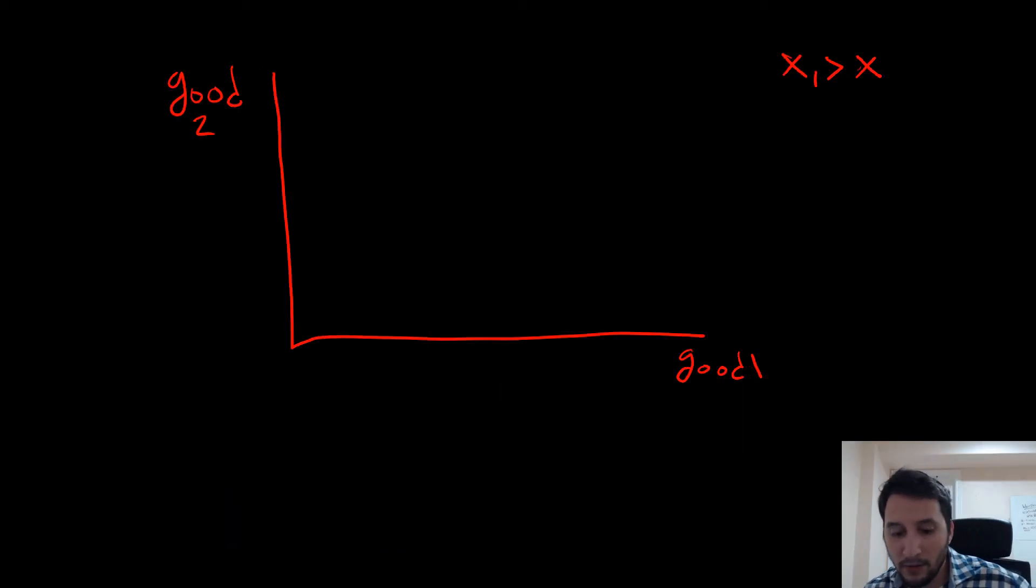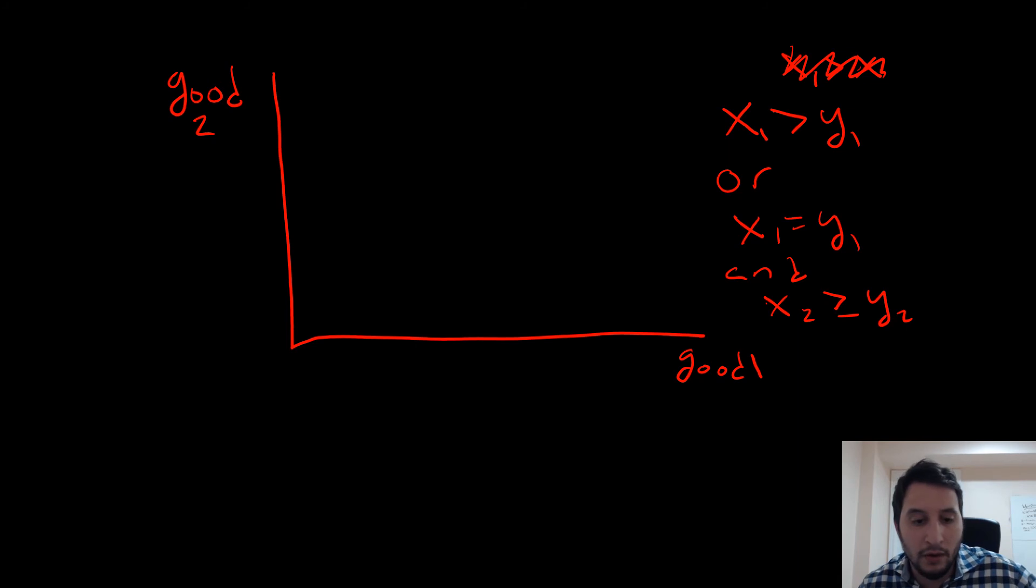So let's talk about what these look like. Let's just erase that over there, get rid of it. Remember, our definition of our lexicographic preferences is as follows. We have x1 has to be greater than y1, meaning the amount of good 1 in bundle x is greater than that in bundle y, or x1 is equal to y1 and x2 is greater than or equal to y2.